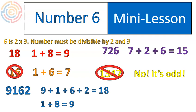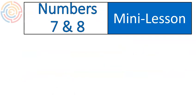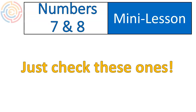For 7 and 8, I recommend that you just check these ones out — divide the number by 7 and see if you get a nice even answer, divide it by 8. There are a couple of tricks to look for, but I think the tricks are more complicated than they're worth. With 8, it does have to be an even number, so you can narrow it down a little bit there.